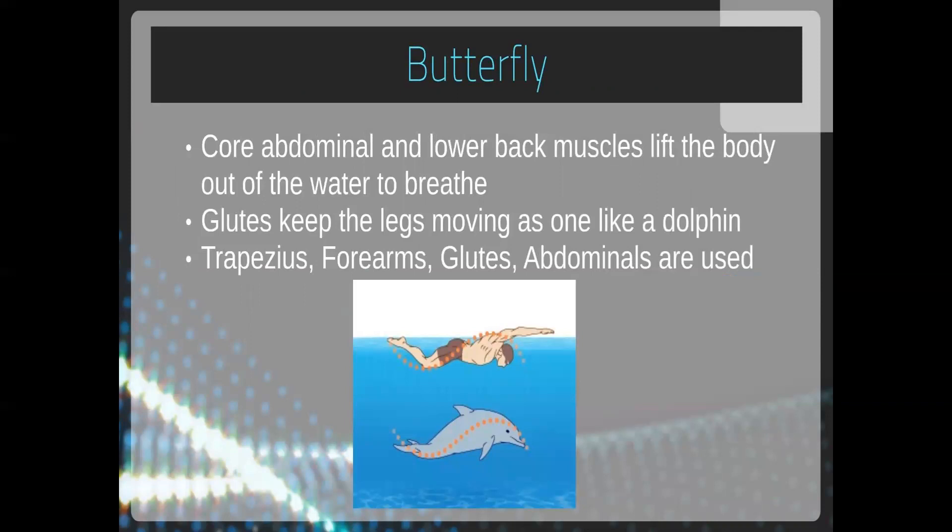For the butterfly stroke, core abdominal and lower back muscles lift the body out of the water to breathe. The gluteus keeps the legs moving as one unit, like a dolphin. Trapezius, forearm, gluteus, and abdominals are also used. As you can see in the figure, the swimmer performing the butterfly stroke moves similarly to a dolphin, with the torso forming an S-shape.